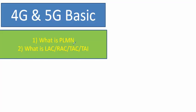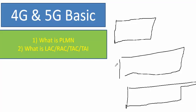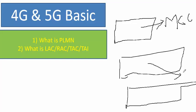Why do we use the word 'public' in the network? Because all over the world, countries divide their geographical area — like the US, America, India. To uniquely identify which operator is in which country, each country is given a specific code called the Mobile Country Code, or MCC.